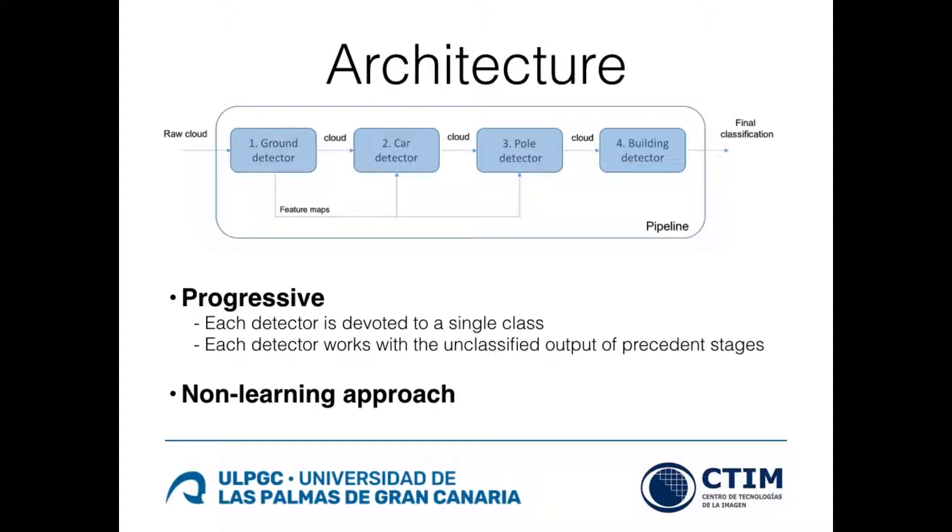It aims to detect progressively the proposed classes one by one using four detectors. The process starts by looking for the ground points and continues with small classes, cars and poles. Finally, it separates the remaining points between buildings and vegetation. Each detector uses only the unclassified output of the present ones.